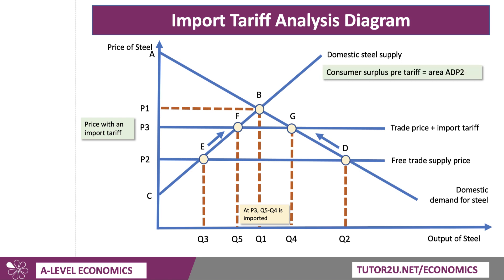What about consumer welfare? Consumer surplus before the tariff was area A-D-P2. Consumers were able to buy steel fairly cheaply, giving them a high level of consumer surplus at quantity Q2. After the tariff, the price has gone up and demand has contracted, so consumer surplus post-tariff is area A-G-P3. There's been a loss of consumer surplus equal to the area P3-G-D-P2.